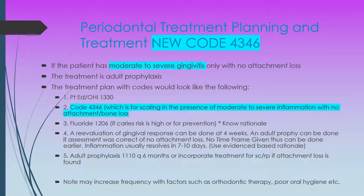We have a new code, the 4346, and this is if a patient has moderate to severe gingivitis only with no attachment loss. Moderate to severe gingivitis would be spontaneous bleeding or heavy bleeding that spills out of the sulcus, enlarged gingiva, and typically six millimeter probing depths or greater, but again no attachment loss. Our ultimate goal is to get to the adult prophy.